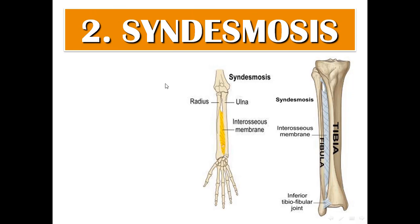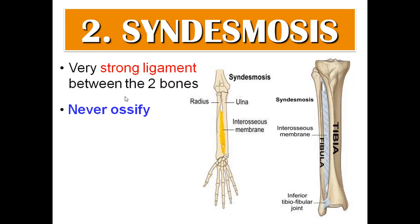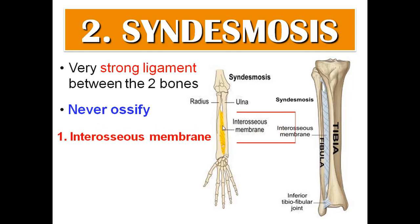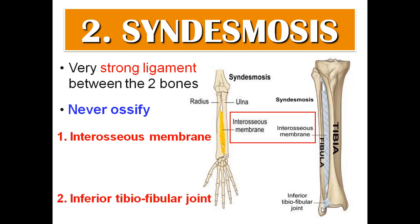Syndesmosis: the fibrous tissue is a very strong ligament between the two bones, and it never ossifies. Examples include the interosseous membrane between the radius and ulna, the interosseous membrane between the tibia and fibula, and the inferior tibiofibular joint — the joint between the lower end of the tibia and the lower end of the fibula.